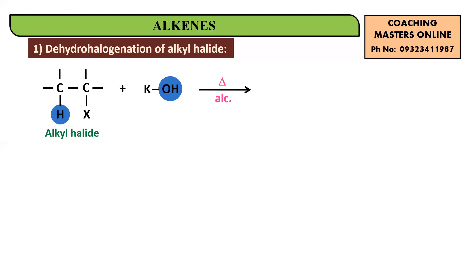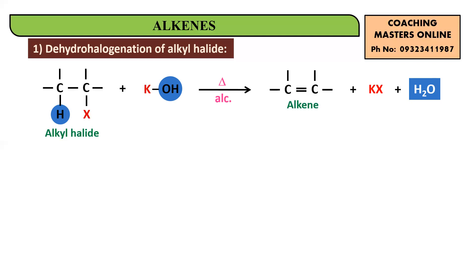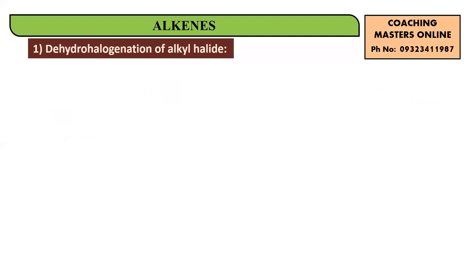The carbon adjacent to the one carrying the halogen — H and OH will combine to give water. K and X will combine to give KX, and you get a C=C double bond — the corresponding alkene. This is the basic reaction of dehydrohalogenation.